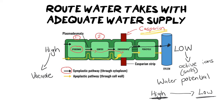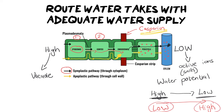The endodermis secretes salts into the pericycle and then into the xylem, where they diffuse from high concentration to low. Because of this high concentration of salt, water is attracted to it and moves towards that area of low water potential. The water potential and ion levels work in opposition: when water potential is high, ion levels are low, and when water potential is low, ion levels are high. Notice that ions move from low to high concentration, which is why we use active transport — we have to move against the concentration gradient.